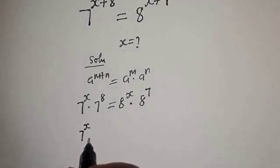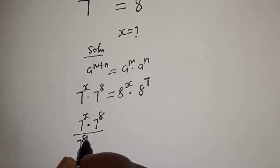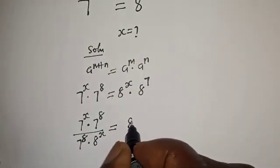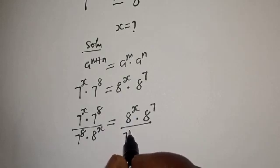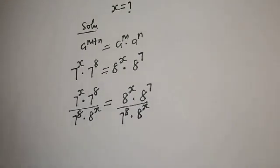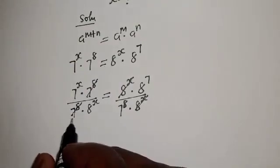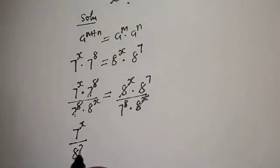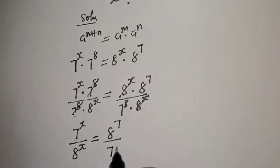7 raised to power x multiplied by 7 raised to power 8, divided by 7 raised to power 8, over 8 raised to power x. This will cancel this, this will cancel this — and 7 raised to power x over 8 raised to power x is equal to 8 raised to power 7 over 7 raised to power 8.